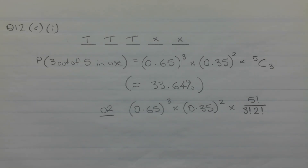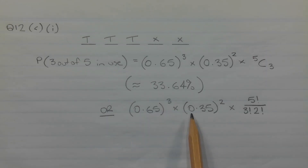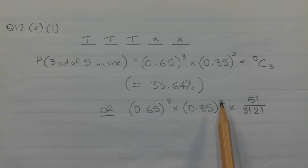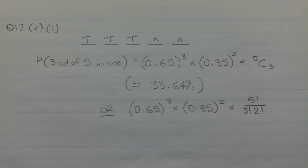We can also represent this using factorial notation: 0.65 to the power of three times 0.35 to the power of two times five factorial over three factorial times two factorial.